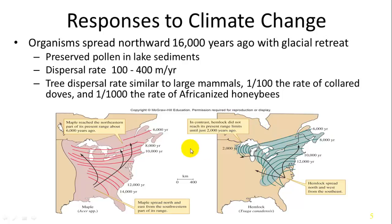Here are a couple of plant species that spread. The maple spread north and east from the southwestern part of its range with glacial retreat, until it covered much of northeastern America into Canada. In contrast, the hemlock took much longer, about 2,000 years, and it spread north and west from the southeast — slightly different directions, but still in this northern trend.